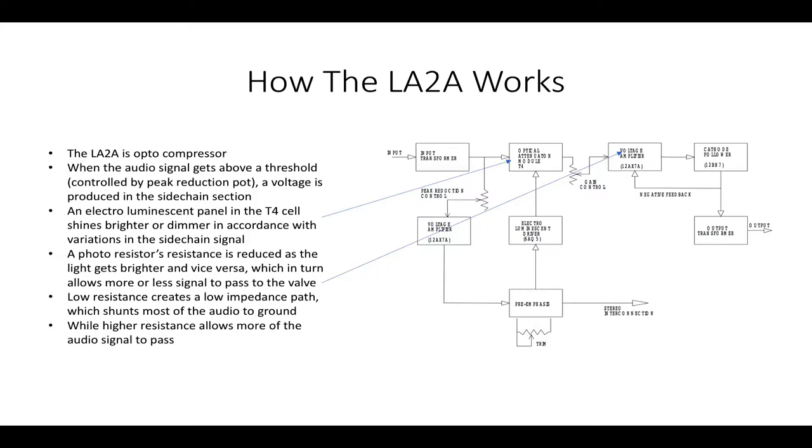Then it goes into another driver and goes into this important part, the T4 cell, which is basically where the compression activity occurs. So there's an electro-luminescent panel, basically a nightlight from this T4 cell, that shines brighter or dimmer in accordance with variations in the side-chain signal. And then the photoresistor - there's a photoresistor in there as well, and this resistance reduces as the light gets brighter and vice versa. In a really extreme example, low resistance creates a low impedance path which basically chomps all the audio to the ground. Higher resistance allows more of the audio to pass, and that basically creates the compression.